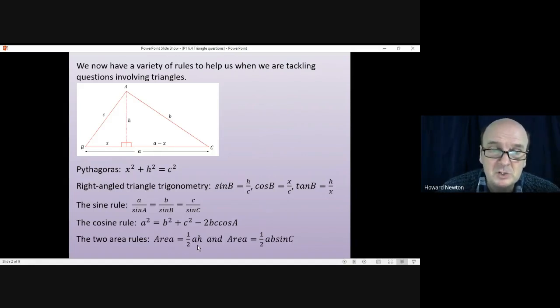We have two rules now for finding the area of a triangle. We can always just do half the base times the vertical height as long as we know the base and vertical height, so ½ah. Or we can use the area equals ½ab·sin(C), where a and b meet at angle C.